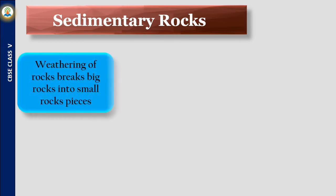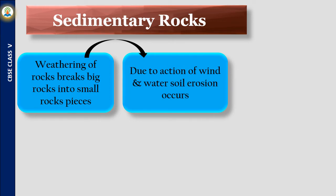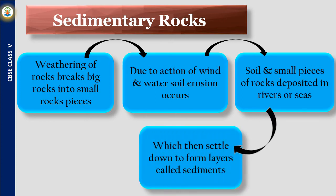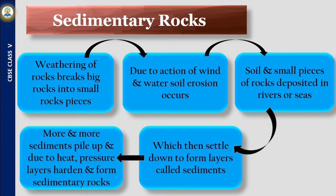Weathering of rocks breaks big rocks into small rock pieces due to the action of wind and water, causing soil erosion. Soil and small pieces of rocks are deposited in rivers or seas, where they settle down to form layers called sediments. More and more sediments pile up, and due to heat and pressure, these layers harden and form sedimentary rocks.